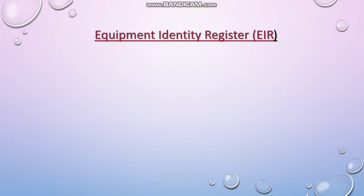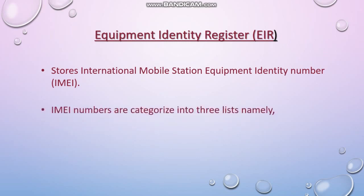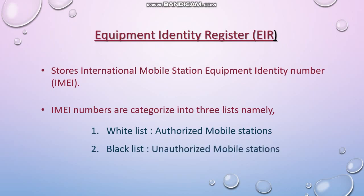Equipment Identity Register, EIR, stores the IMEI number, which is short for International Mobile Station Equipment Identity — this is the number of the mobile phone given by the manufacturer. Those IDs are categorized by the EIR into three lists: white list — authorized devices; black list — devices unauthorized by the telecom operator (for example, stolen mobile phones will be put into the black listed category after you inform the authorities); and gray listed ones — devices identified as risky, which the operator will investigate for any irregularities.